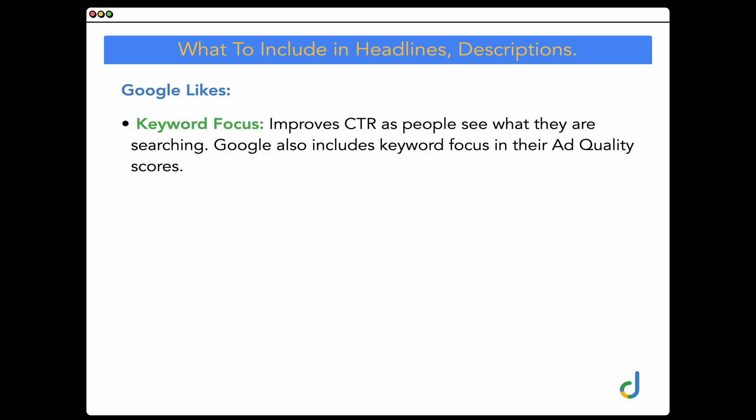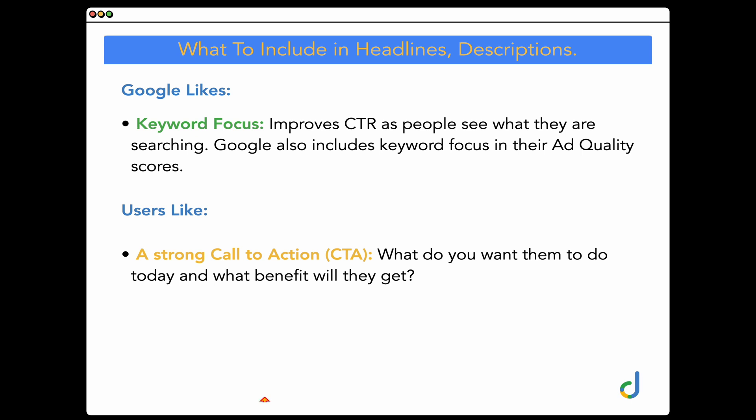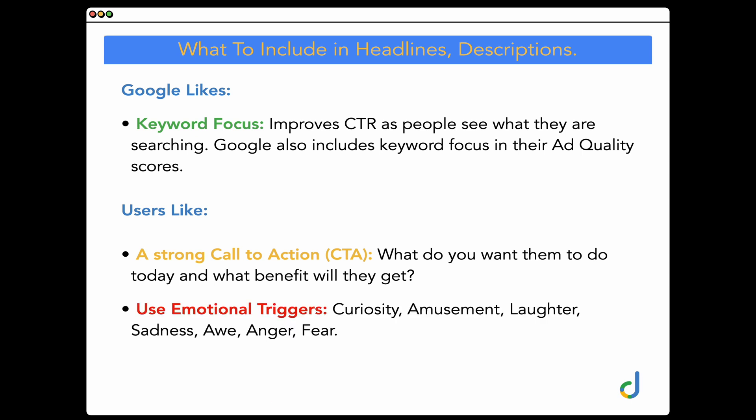I like to break this down into two core categories: what Google likes — keyword focus, which improves click-through ratio — and what users like, which includes brand mention, strong call to action, and emotional triggers. For success with ad copy, you want to make sure you have not only what Google likes but also what users like.